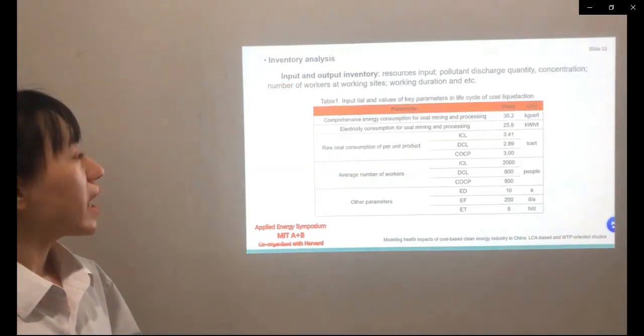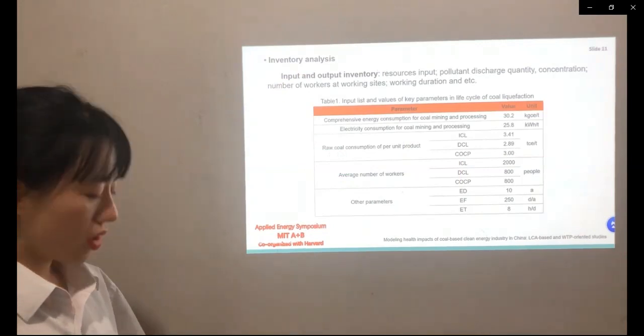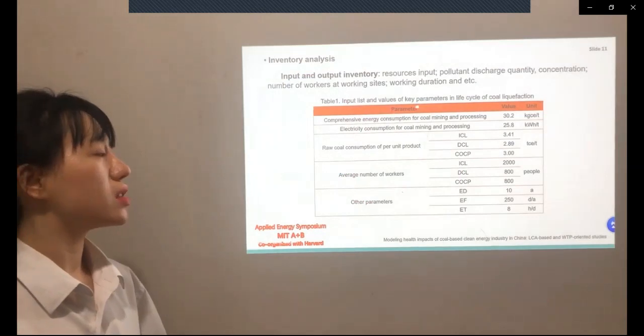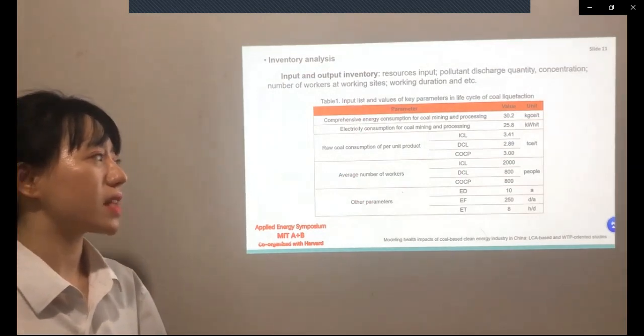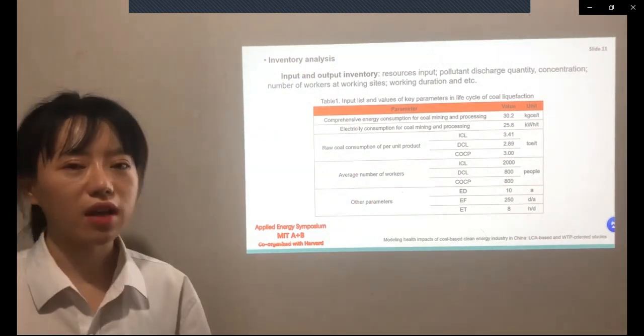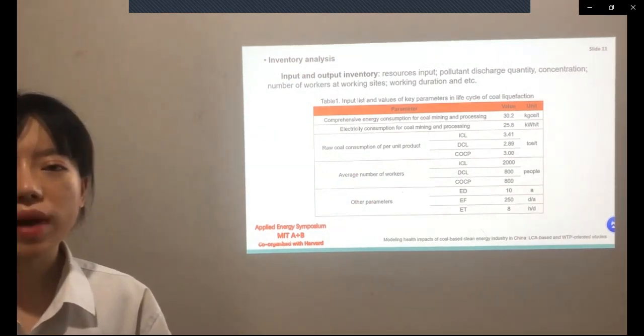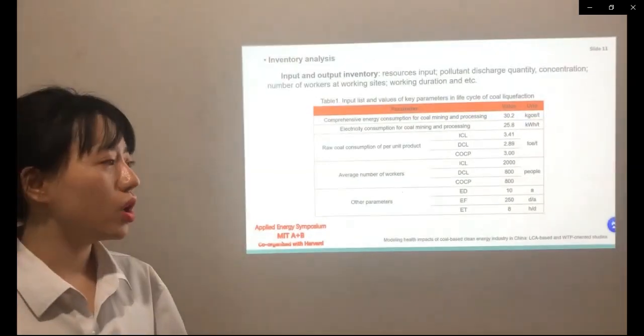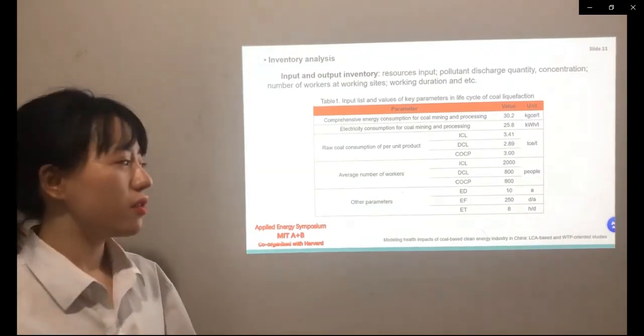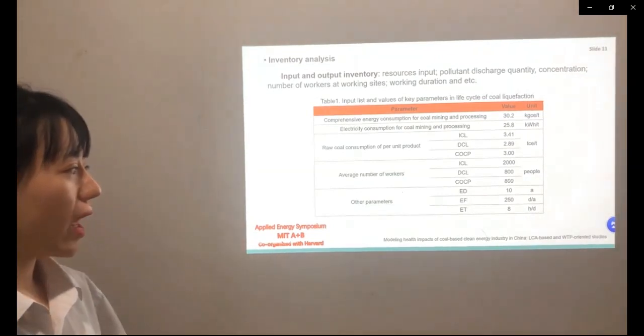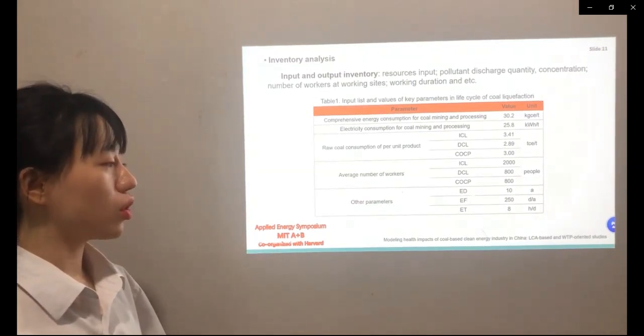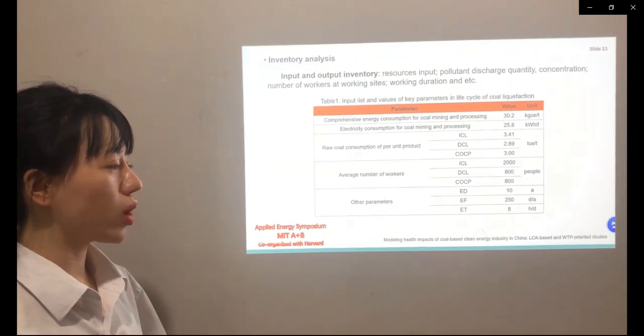The next step is inventory analysis. Here I need an example to show the improvements and some new parameters in life cycle. We can easily find differences from other conventional life cycle analyses. Our models pay more attention to exposure concentrations and environmental pollution. For example, we collected information such as the number of workers and working duration, working frequency, and working time.